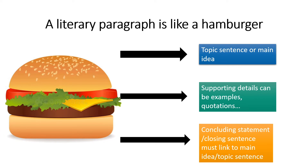What makes up this hamburger paragraph? Firstly, the top bun is a good topic sentence or main idea. Before you begin any literary paragraph, you need to have a topic sentence. In the middle of the hamburger are all your supporting ideas and details — these can be examples or quotations that really support your topic sentence. And then we have the bottom bun, the closing bun that keeps your hamburger together. In a literary paragraph, we also need a concluding statement or closing sentence, and it should link back to the main idea or topic sentence, wrapping everything together.